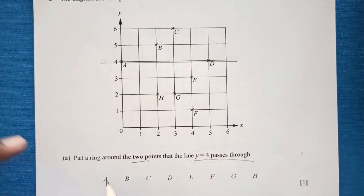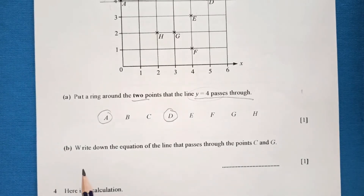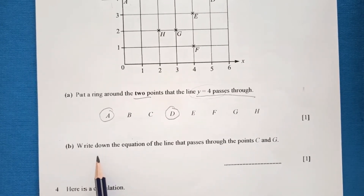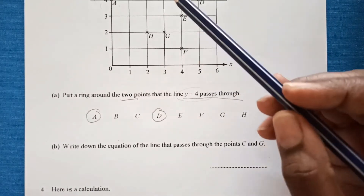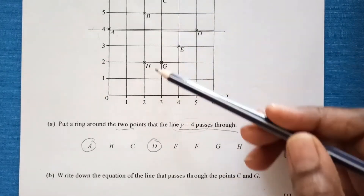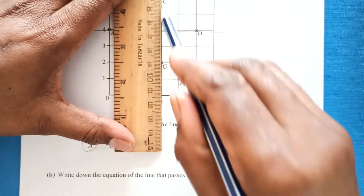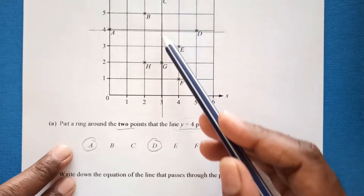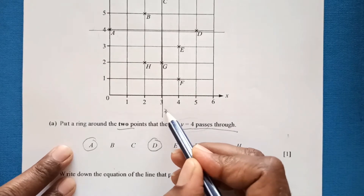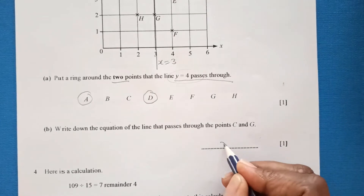We circle point A and point B. Part b: write down the equation of the line that passes through points C and G. C and G are here, so we draw the line through them. This line lies on x equals 3, so the equation of the line is x equals 3.